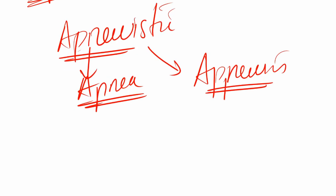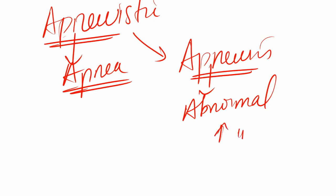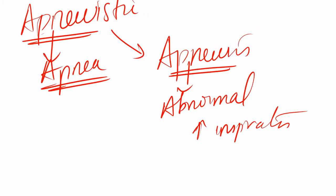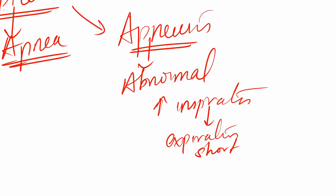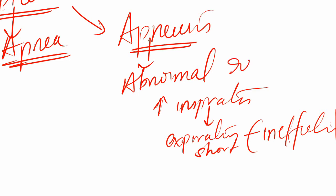Apneosis is an abnormal type of breathing in which there is increased depth and duration of inspiration, followed by a short, ineffective expiration. If you are having prolonged inspiration, the expiration should compensate, but in apneosis the expiration is short and ineffective. So apneosis is an abnormal type of respiration where there is increased inspiration followed by a short, ineffective expiration. Overstimulation of the apneustic center causes apneosis.